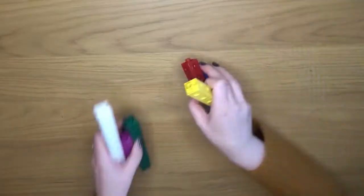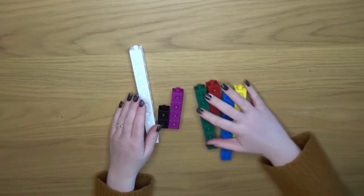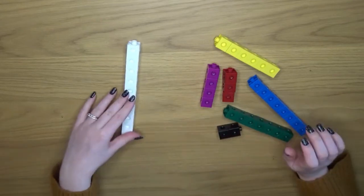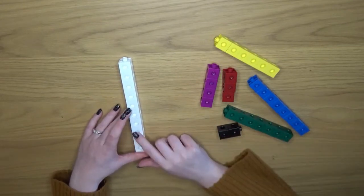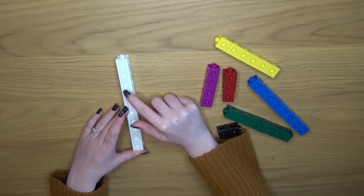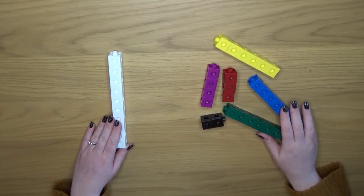Moving on we can use other resources for learning number bonds to ten too. For example you can use something like unifix cubes or numicon to give a visual representation of number bonds to ten using colours. First of all you'll need one tower that has ten cubes in it, that's my white one here, and that tower does not get broken apart.